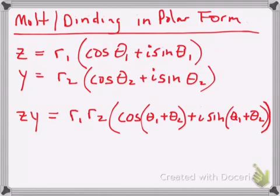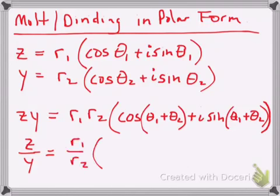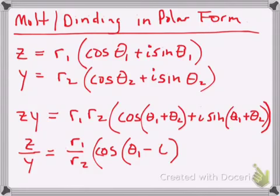Now for the division formula: z divided by y equals r₁ divided by r₂ times cosine of (θ₁ − θ₂) plus i sine of (θ₁ − θ₂). Because multiplication and division are inverse operations, and so are addition and subtraction, we subtract the angles instead of adding them.